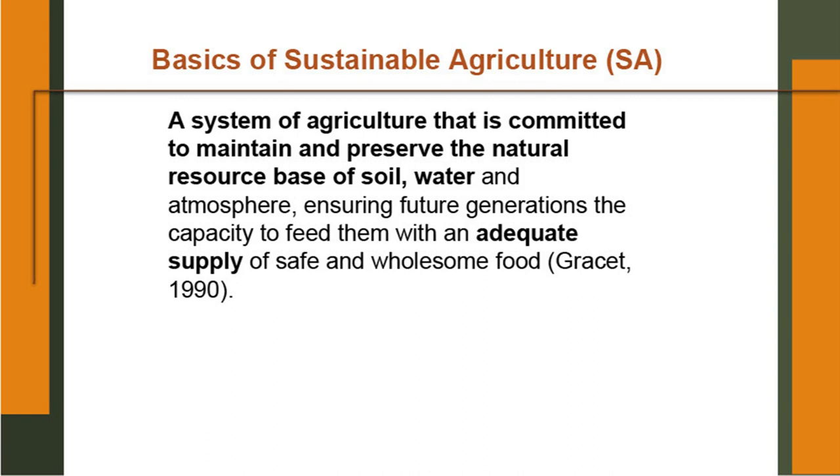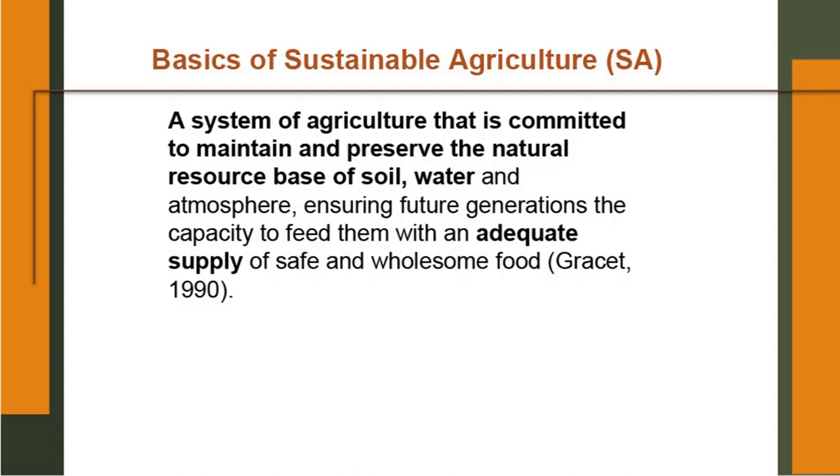After the glossary, let us start the main topic — integrated farming system. Many times it is assumed that the conventional system of farming is not sustainable and many people argue that we need some alternative. IFS is an alternative which is thought to be a sustainable system because everybody likes to have a sustainable farming system that can sustain the income of the farmer, that does not degrade the natural resources, and where overall biodiversity is increased. So let us see what are the basics of sustainable agriculture.